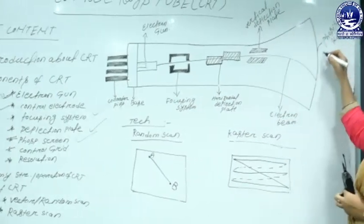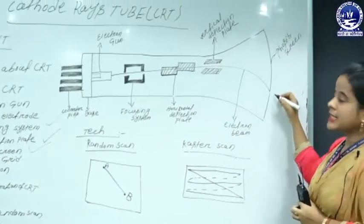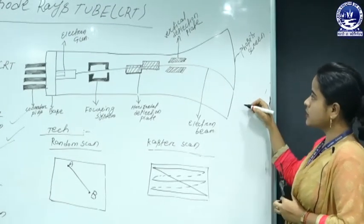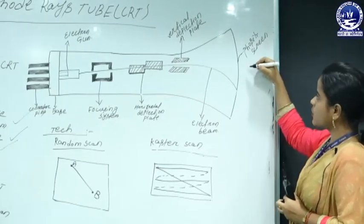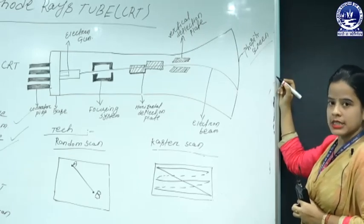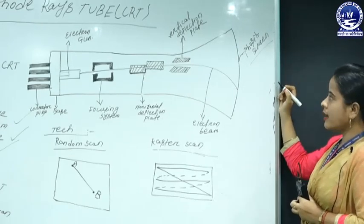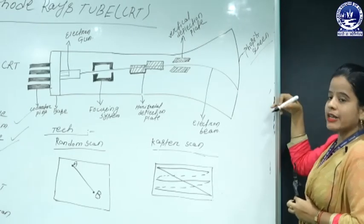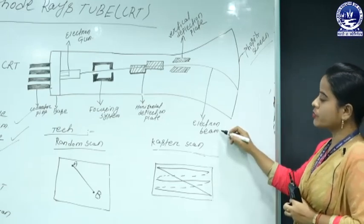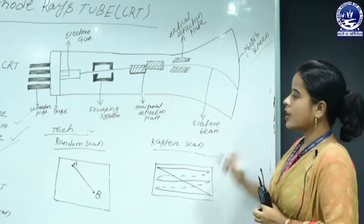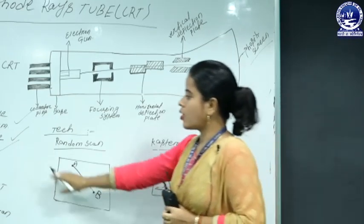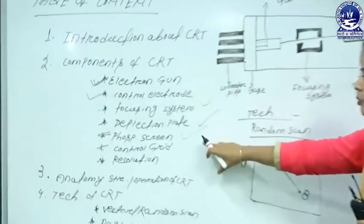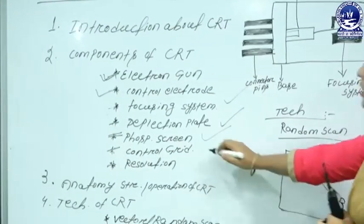Now going to the next component — that is your phosphorus screen. Every CRT is internally embedded with its front face normally coated with phosphorus material. This is because phosphorus glows whenever the electron beam hits it. So we always use phosphorus-coated material on the CRT screen.